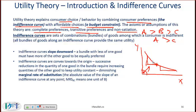At any point there will always be a marginal rate of substitution, which is the slope or gradient at that point. When you see marginal rate of substitution, it will have two subscripts.